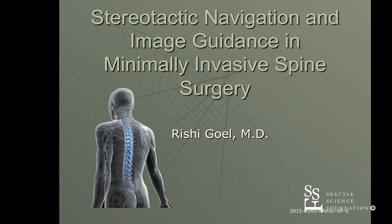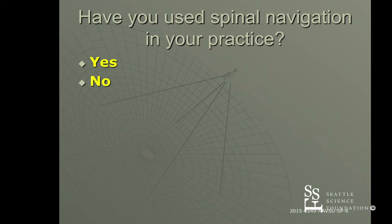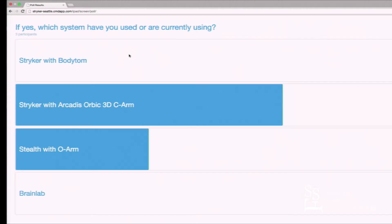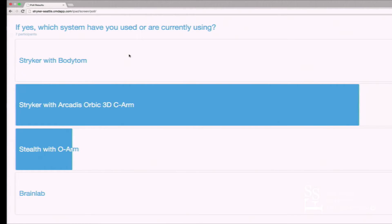Just by a show of hands, how many of the surgeons here have used navigation in their practice? Okay, so everyone's pretty much familiar with it. And which systems are you using — BodyTOM, the 3D C-arm, the O-arm, or BrainLab? So mostly the 3D C-arm, by a significant amount.